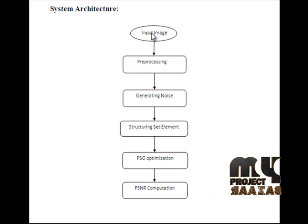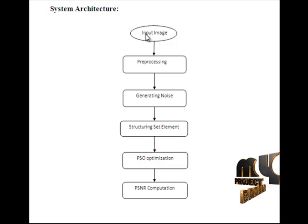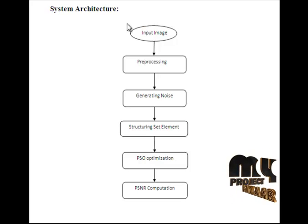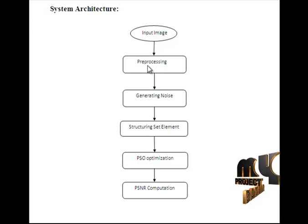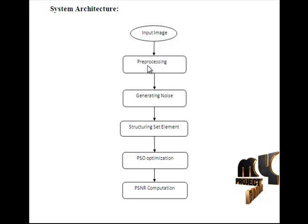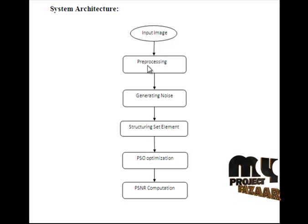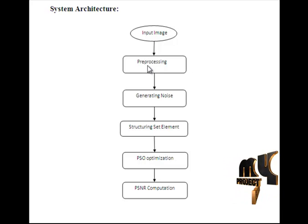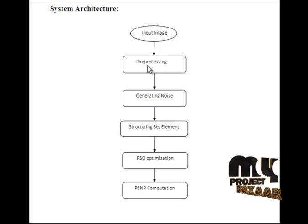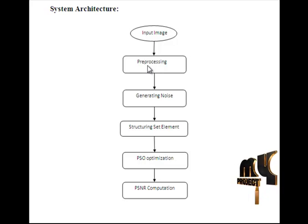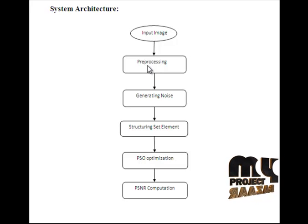This is the flow of our project. Initially, we provide an image as input. The input image passes to the pre-processing stage. In this module, three processes are performed. In the first process, we change the image format to PNG. Normally, the image can contain different types of formats such as JPEG, PNG, and TIFF. We convert the image from TIFF to PNG.